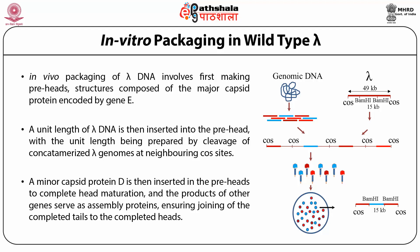In vitro packaging of wild-type lambda DNA involves first making preheads — empty structures composed of major capsid protein encoded by gene E. A unit-length lambda DNA is then inserted into preheads, with the unit length being prepared by cleavage of concatemerized lambda genome at neighboring cos sites. A minor capsid protein D is then added to the preheads to complete head maturation. The products of other genes serve as assembly proteins, ensuring joining of complete tails to the completed heads.